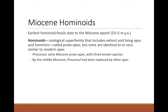Hominoids date to the Miocene — this group includes all living apes and these proto-apes. Some really early Miocene proto-apes became very widespread, including Proconsul. We have at least three known species of Proconsul widespread across Africa. However, by the middle of the Miocene, Proconsul had died out and been replaced by other apes.